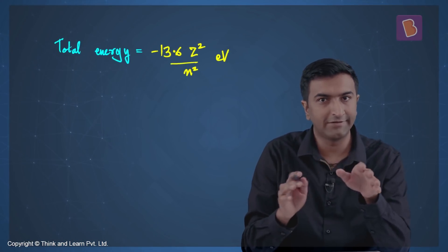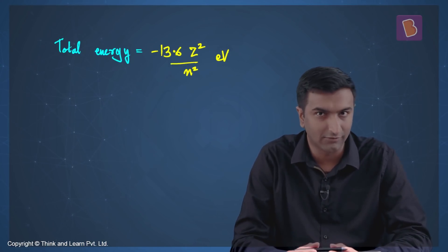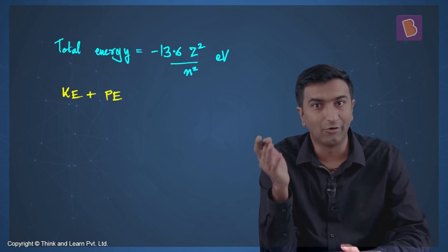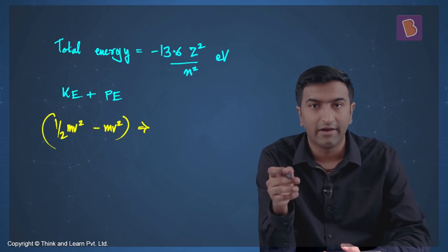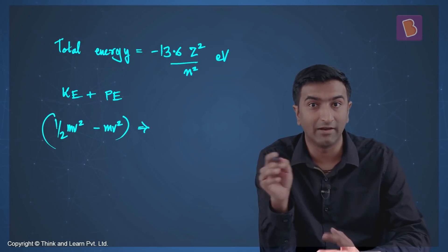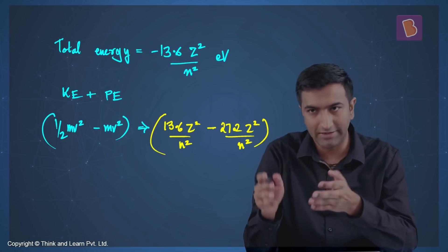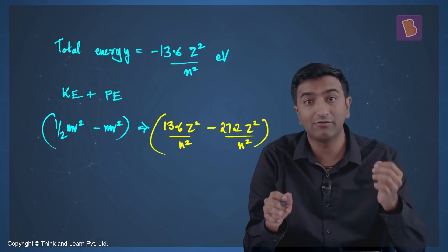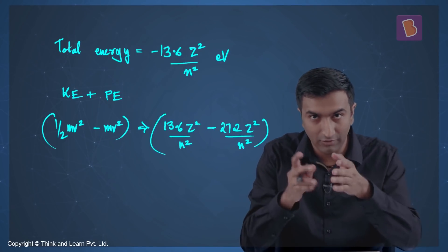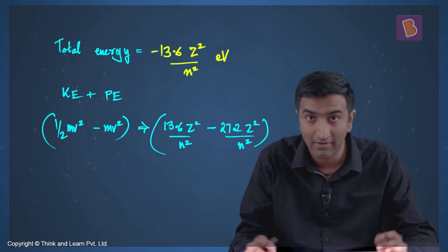This is a multiple-answer-correct question. The first two options talk about energy of the Bohr orbit, the third talks about radius, and the fourth has more energy ideas. The total energy is −13.6 Z²/n² eV. Where does this come from? The total energy is kinetic plus potential energy. Kinetic energy is ½mv², and potential energy turns out to be −mv². In numbers: KE = 13.6 Z²/n² and PE = −27.2 Z²/n². Adding these gives −13.6 Z²/n².